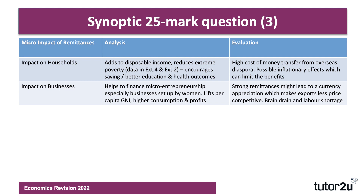At a micro level in terms of businesses, remittances are quite important in funding micro-entrepreneurship — small start-ups, particularly businesses set up by women and young people. Remittances provide seed finance for businesses and can help address embedded structural gender inequalities. Since remittances lift per capita incomes — 1% increase leading to a 4% rise — this boosts consumption of goods and services, increasing revenue and profit for businesses, particularly those providing basic services and products to relatively poor households.